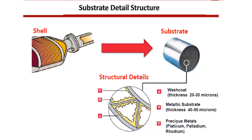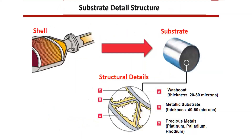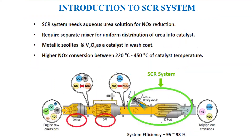We use catalysts like metallic zeolites and vanadium oxide in the wash coat. In the wash coat area, we are going to use V2O5 and metallic zeolite. The catalyst requirement will vary from system to system, but the substrate structure is quite common — only the catalyst varies.